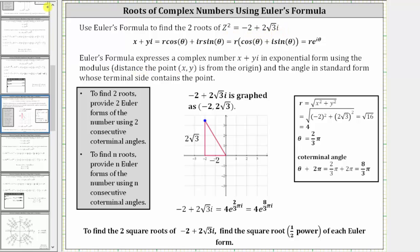Euler's formula expresses a complex number in the form x plus yi in exponential form, which is r times e raised to the power of i theta, where r is the modulus or distance the point (x, y) is from the origin. This is the same r in polar form, and the angle theta is the angle in standard position whose terminal side contains the point (x, y).